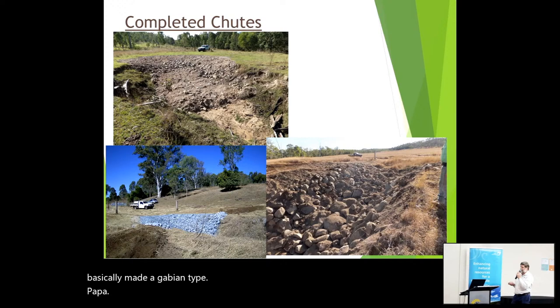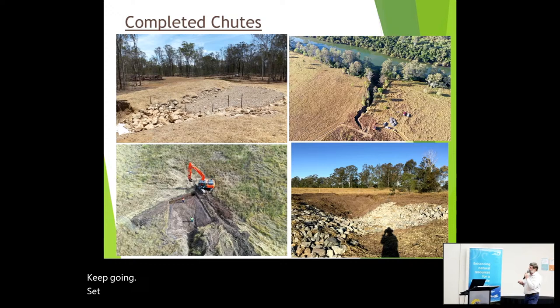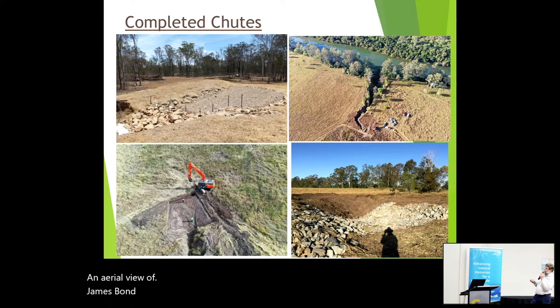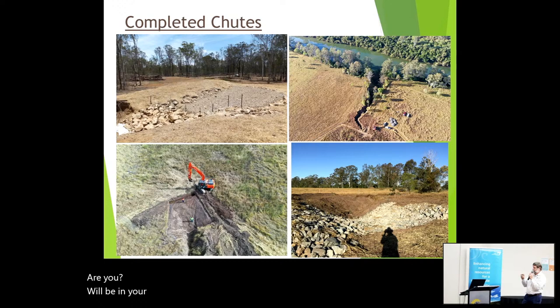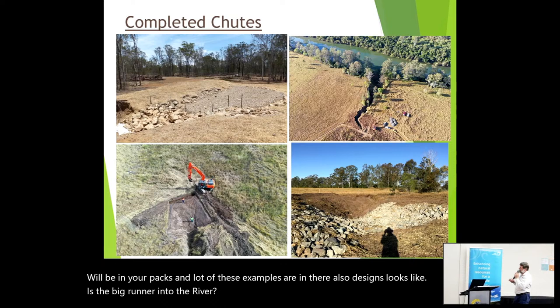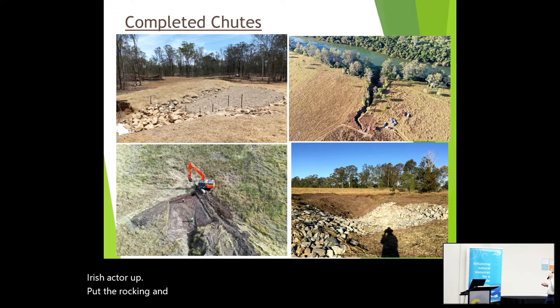Floodwaters go out and suck out the soil and those little runners keep going unless you stop them up. This is an aerial view of a similar one — that's a dam bywash. We had a smaller rock with netting over the top and a large rock at the bottom to take the energy out before it goes away. There's a gully erosion book in your packs and a lot of these examples are in there with designs. There's a big runner into the Mary River, probably nearly six metres deep — very narrow, not a big catchment. We got the excavator in, shaped her up, put the rock in and created safe delivery from the well-grassed pasture up here down to the bottom of that little gully. About 12 months old and working quite well.